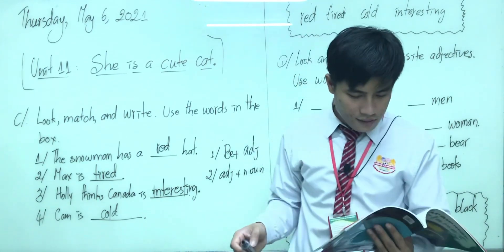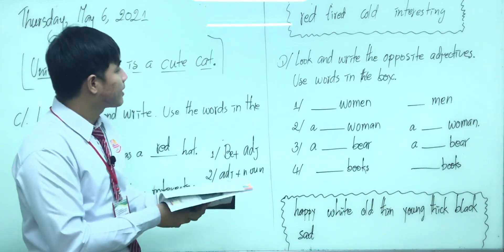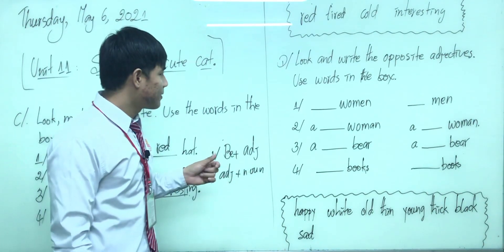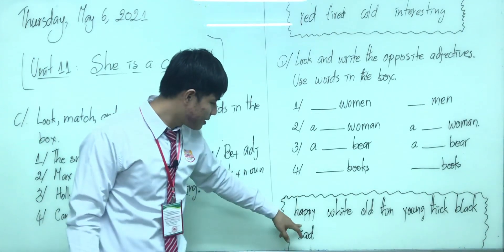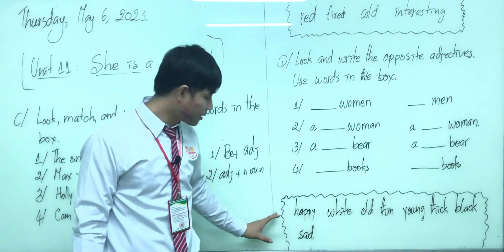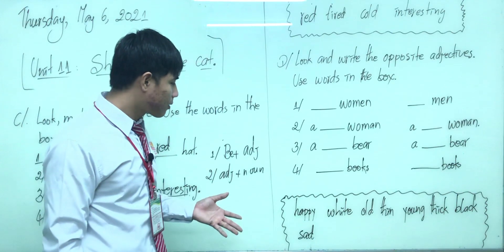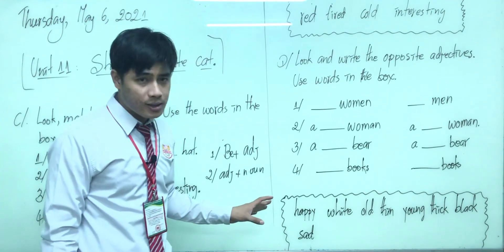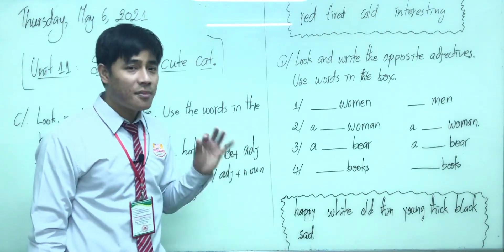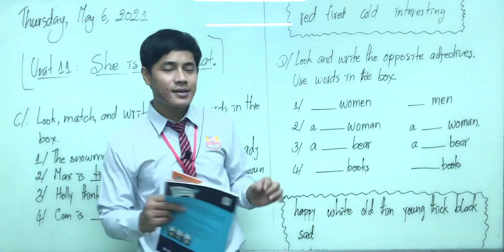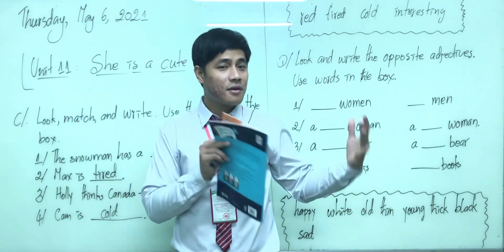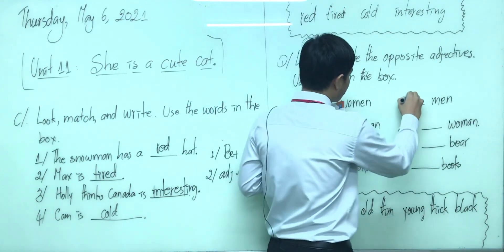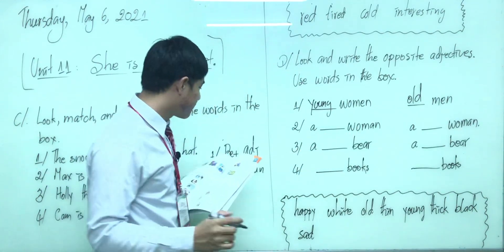Next is the exercise on Part D: look and write the opposite. Opposite — do you know what opposite means? Use the words in the box. Here are the words in the box — these are all adjectives: happy, white, old, thin, black, and sad. What you have to do is write the opposite. Like white is opposite from black, and young is opposite from old.